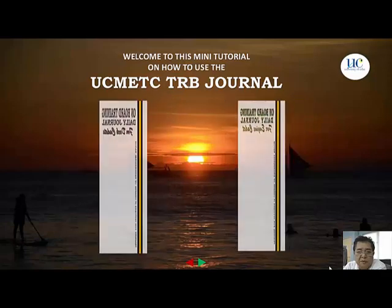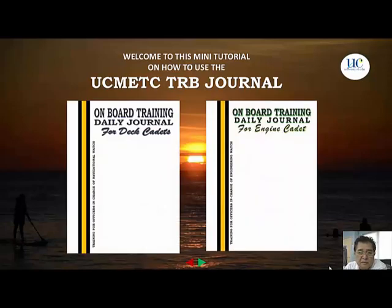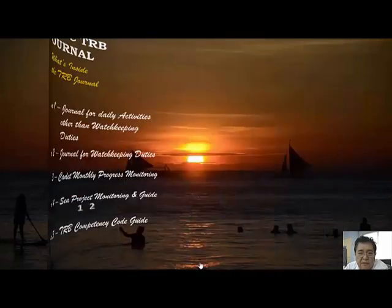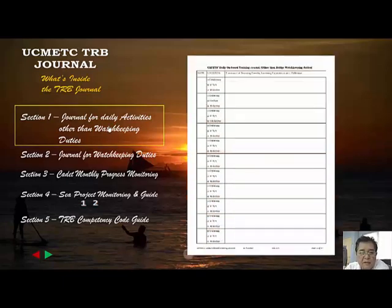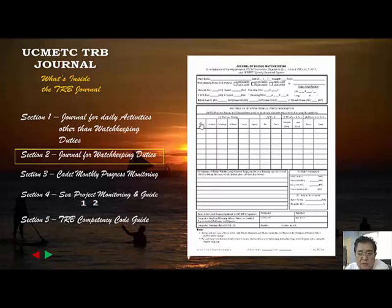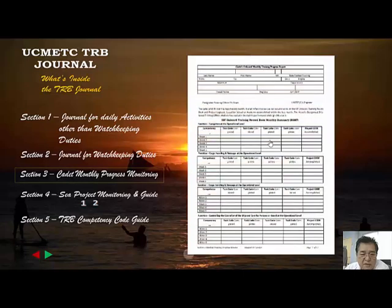Welcome to this tutorial on your training record book journal. We will discuss how to use this record book journal. The left side is your deck journal and the right side is your engine journal. This journal has five sections: section one is the journal for activities other than watchkeeping, meaning you are not on the bridge, and section two is the journal for watchkeeping duties.